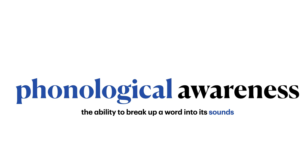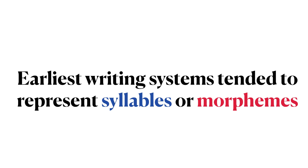Phonological awareness — the ability to break up a word into its sounds — is a taught skill, and this awareness tends not to be instinctive and intuitive. It should not be surprising, then, that the earliest writing systems tended to represent more intuitive linguistic units, those that the speakers would have been more intuitively aware of: namely syllables and morphemes or words.